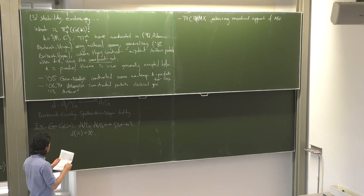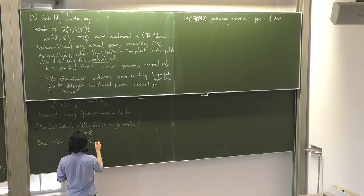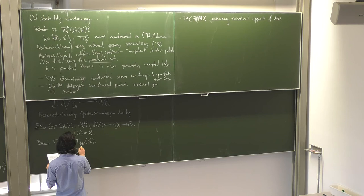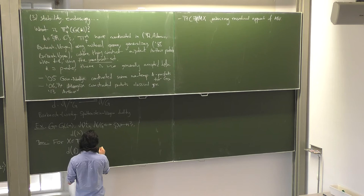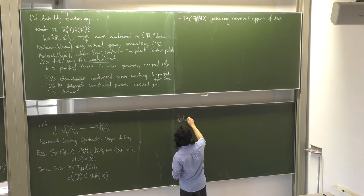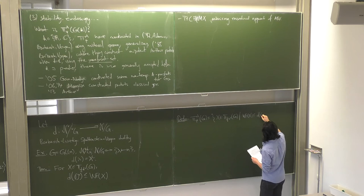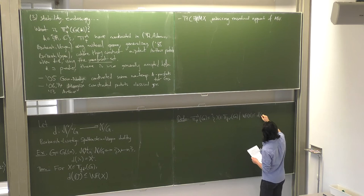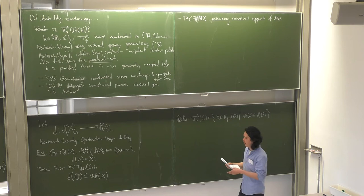The theorem essential for defining unipotent Arthur packets states that for any representation with this infinitesimal character, the wavefront set is bounded below by the Barbasch-Vogan dual of O-check. The definition of the Arthur packet is then straightforward: we define the Arthur packet attached to psi to be the set of representations with this infinitesimal character such that the wavefront set equals this bound. So that's the complex case. Now let's look at the p-adic case — we want to mimic this approach.